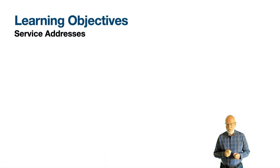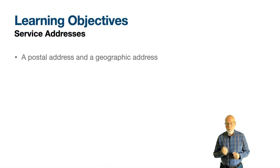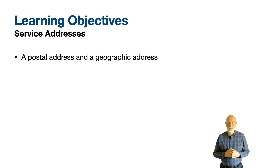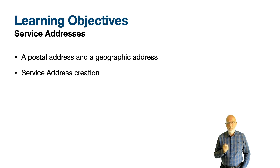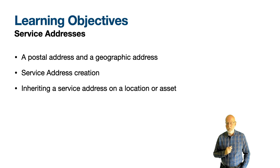A service address can be both a postal address and a record that creates a point on a map, which helps to locate a location, asset, service request, or work order. We'll take a first step by reviewing the service address application and then exploring how the service address is inherited on a location or asset.